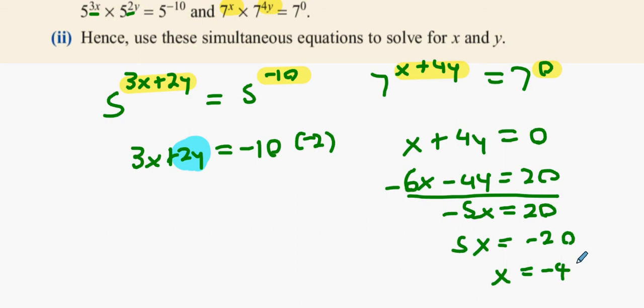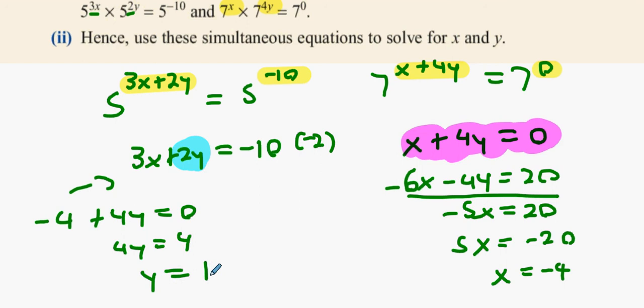All right, now we know what the x value is, so let's find out what the y value is then. I'm thinking about using which one? I think about using this one - it looks easy, doesn't it. So what can I do there? Replace x with minus 4. Minus 4 plus 4y equals 0. So 4y equals 4, and y equals 1. Awesome.